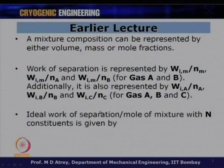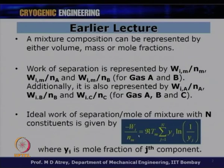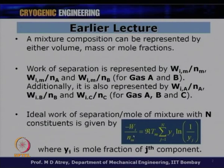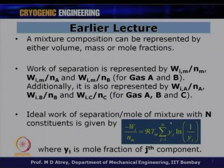We also solved some tutorial problems to understand the values associated with this. The ideal work of separation per mole of mixture with N constituents is given by this formula. We solved problems to understand the significance of this formula - to get ideal work of separation per mole of mixture, per mole of gas A, B or C. It is R*T_M = sigma (j=1) y_j * log(1/y_j), where y_j is the mole fraction of the j-th component.